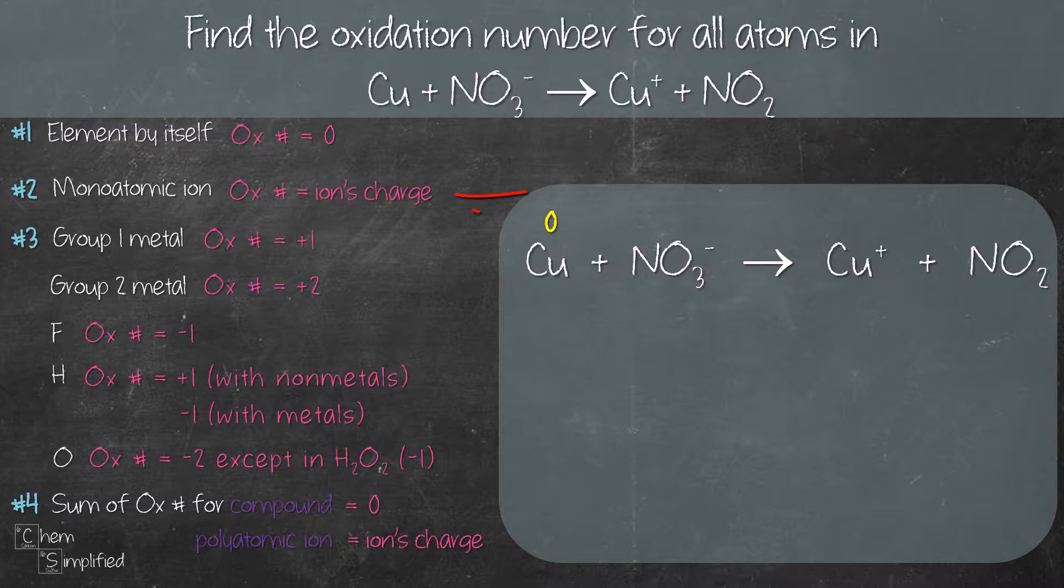Looking at rule number two, the oxidation number of a monoatomic ion is the same as its charge. We have one monoatomic ion in this equation which is Cu+. That means the oxidation number for Cu in Cu+ is going to be plus one.